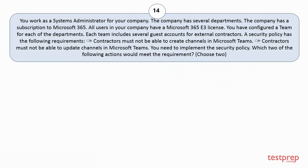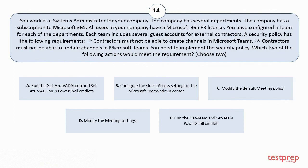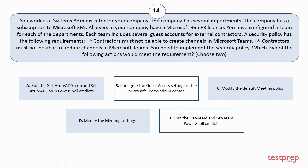Question 14. You work as a systems administrator for your company. The company has several departments. The company has a subscription to Microsoft 365. All users in your company have a Microsoft 365 v3 license. You have configured a team for each of the departments. Each team includes several guest accounts for external contractors. A security policy has the following requirements: 1. Contractors must not be able to create channels in Microsoft Teams. 2. Contractors must not be able to update channels in Microsoft Teams. You need to implement the security policy. Which two of the following actions would meet the requirement? Choose two. Your options are: A. Run the Get-AzureADGroup and Set-AzureADGroup PowerShell cmdlets. B. Configure the Guest Access Settings in the Microsoft Teams Admin Center. C. Modify the Default Meeting Policy. D. Modify the Meeting Settings. E. Run the Get-Team and Set-Team PowerShell cmdlets. The correct answers are Option B and E.